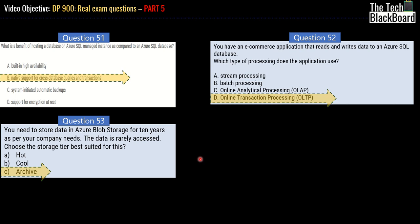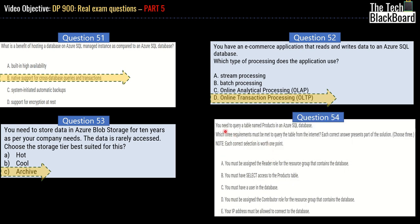Question 54: you need to query a table named 'Products' in Azure SQL Database — which three requirements must be met to query it from the internet? Option A says you must be signed in as a reader role for the resource group containing the database — this is related to the resource group, not directly to the database. Option B — you must have SELECT access to the Products table — this looks correct.